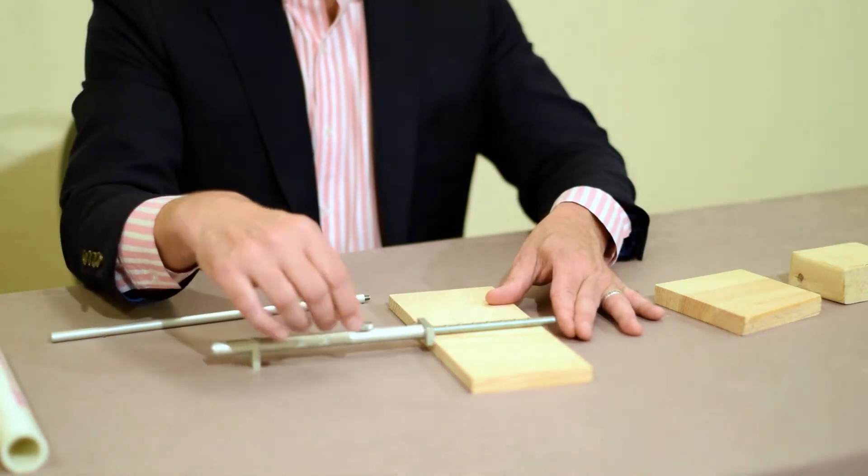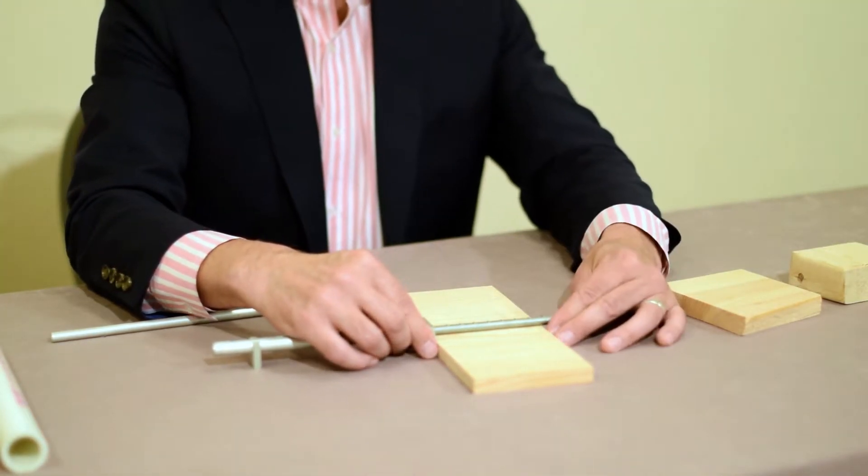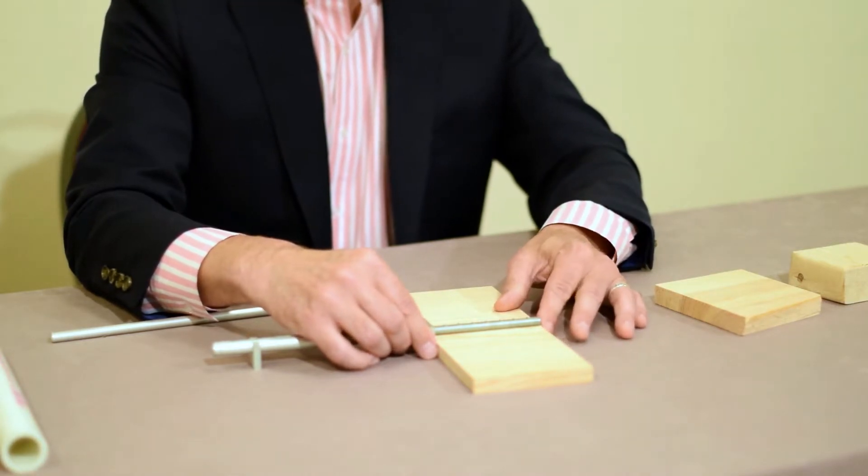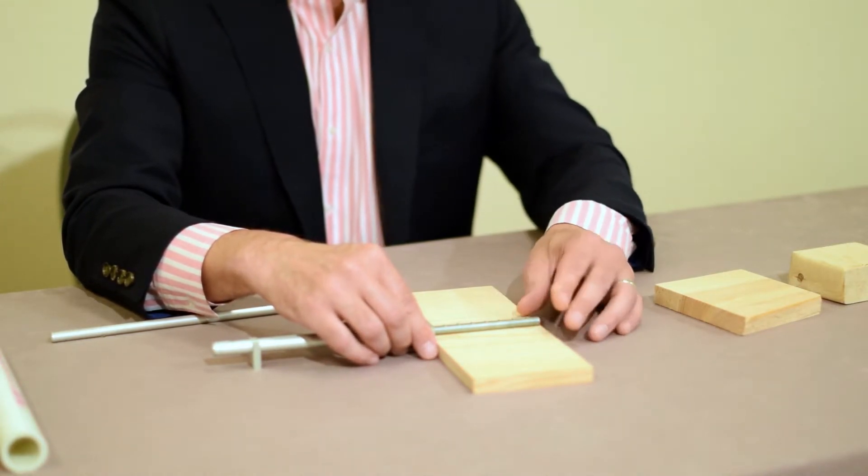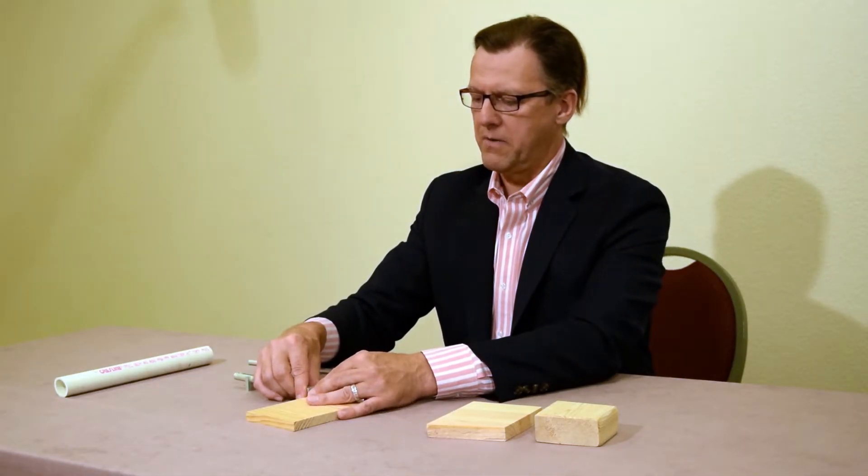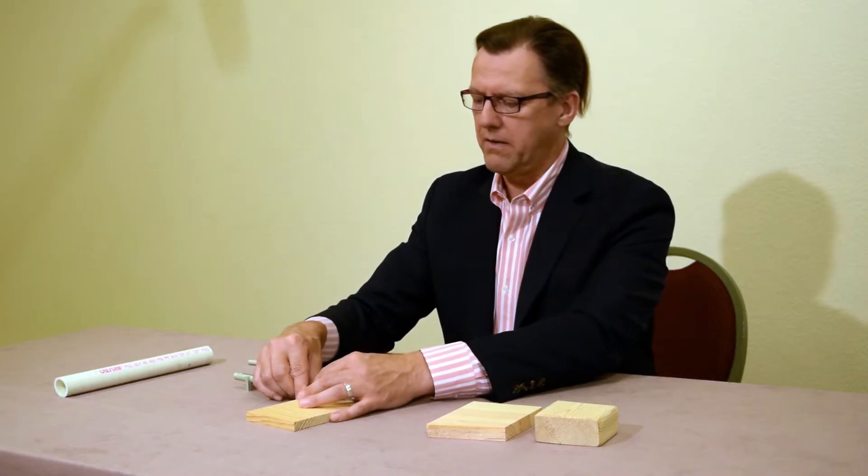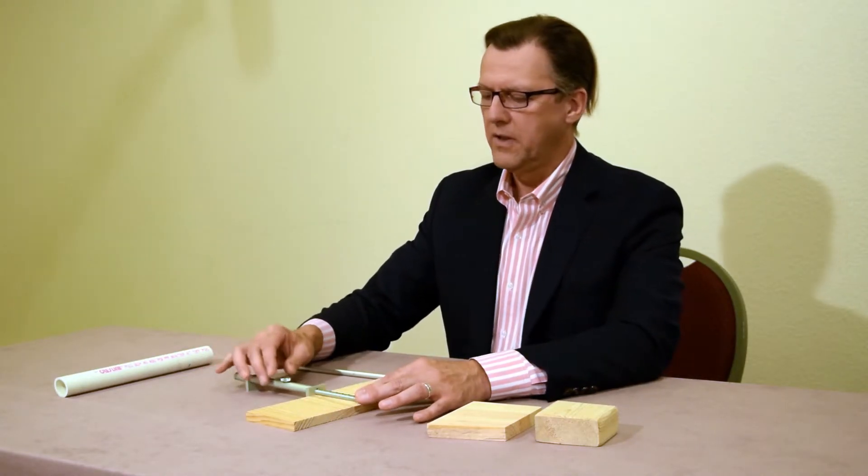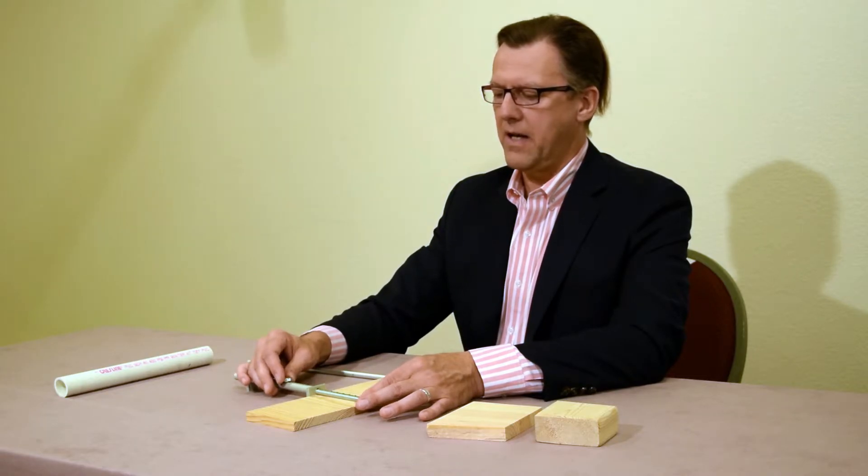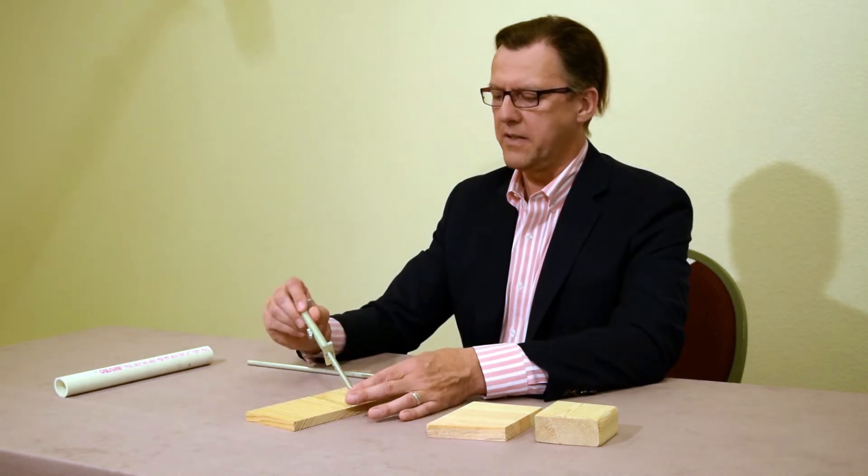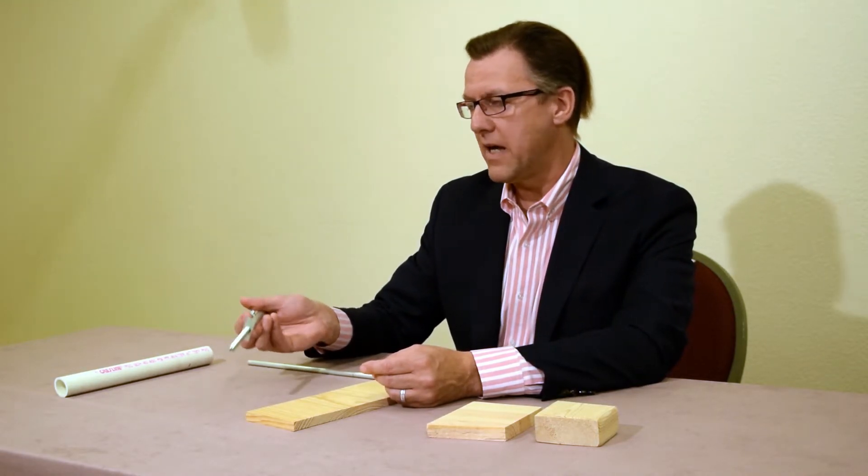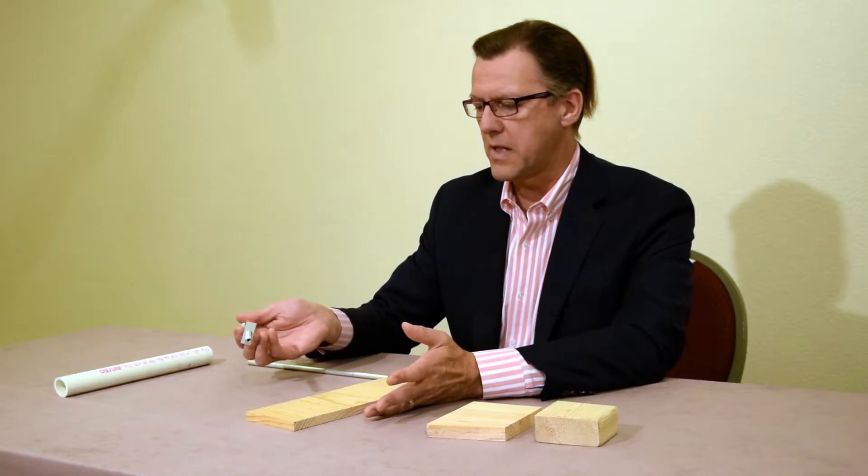And then what we do is we take the end of the information rod and run it parallel to the edge of the wood. And we have a lovely example here. This is great. What I'm going to do is get that information rod as parallel as I can, which I just did, and I ask my students to tighten the knob so that that measurement is not going to shift. It's not going to slip.